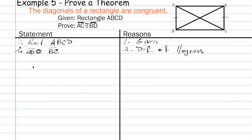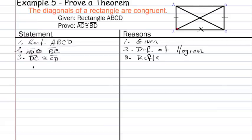Now we can say that DC is congruent to itself — I usually mark that with an X — because of the reflexive property. Now we have two of our sides congruent. I'll write that as CD to keep the order of the vertices correct, and the reason is the reflexive property of congruence.